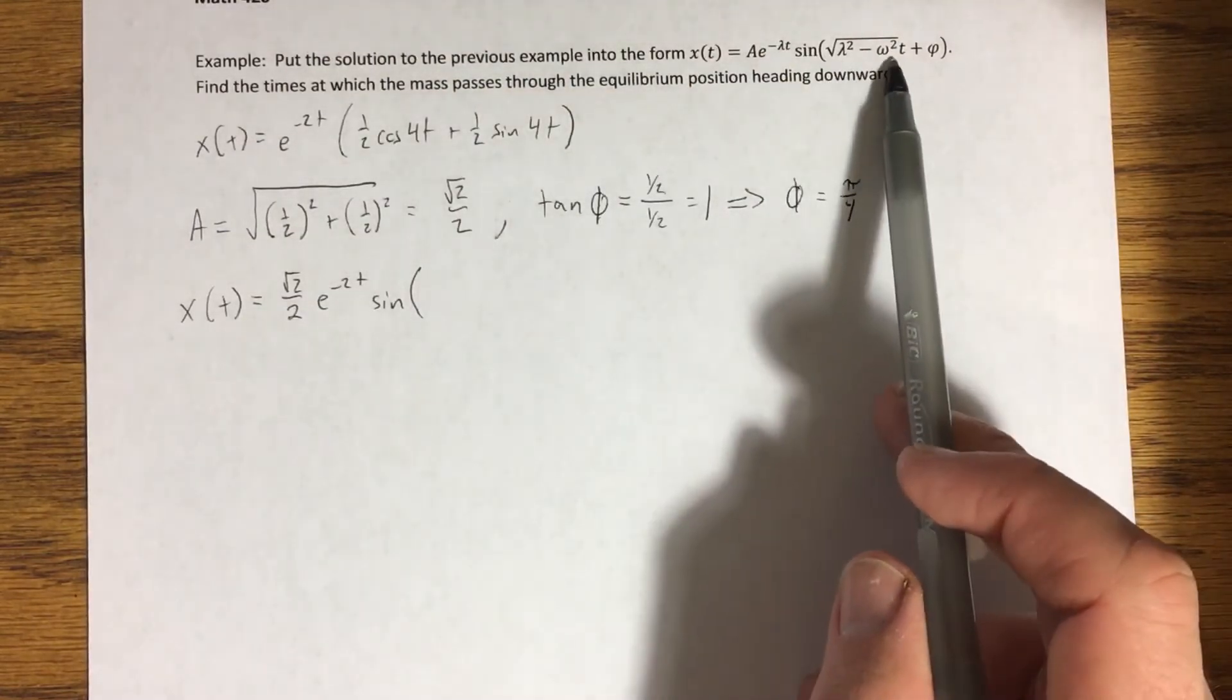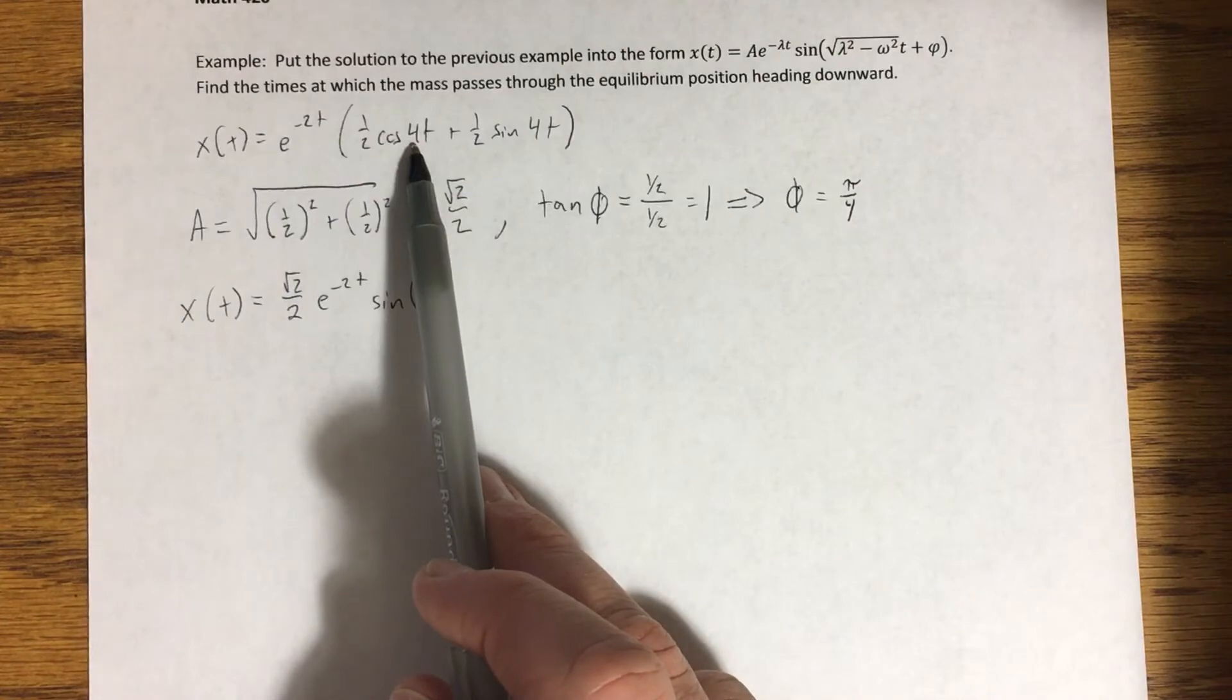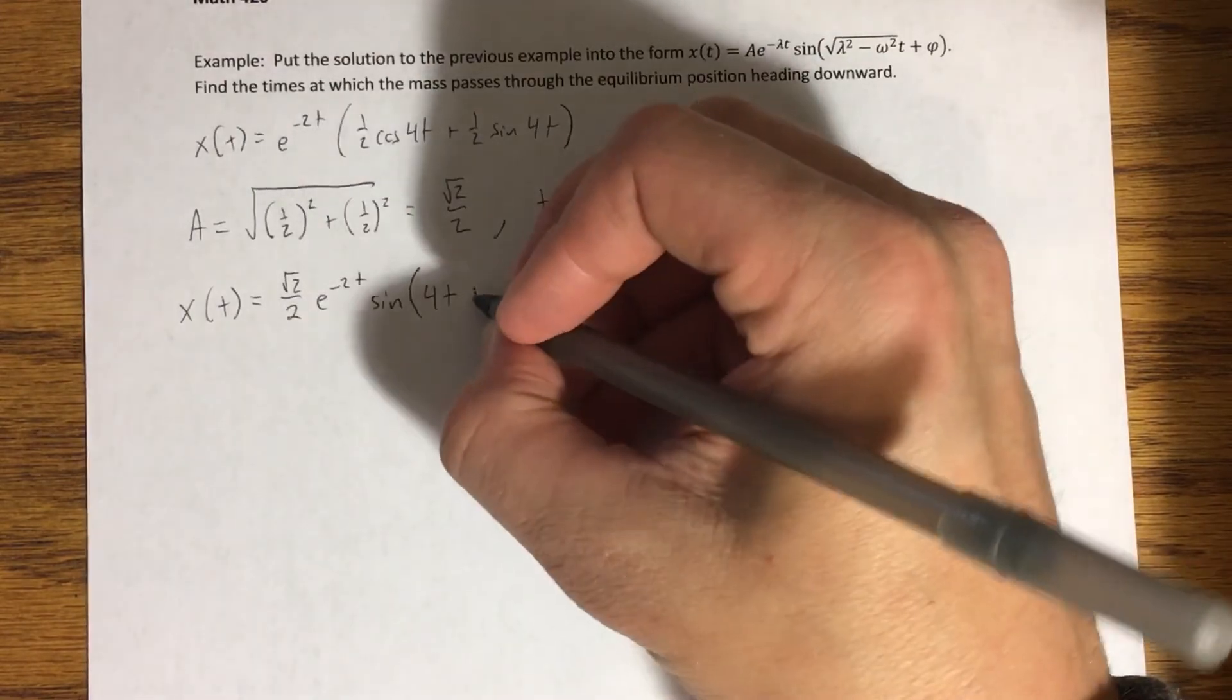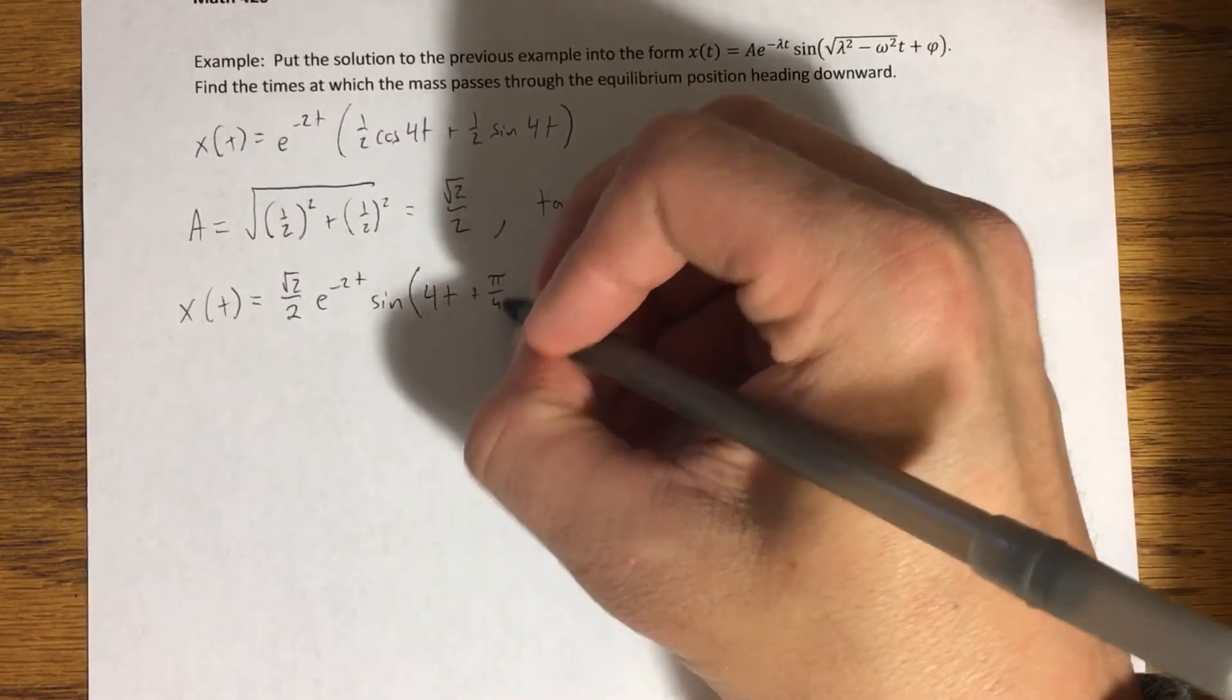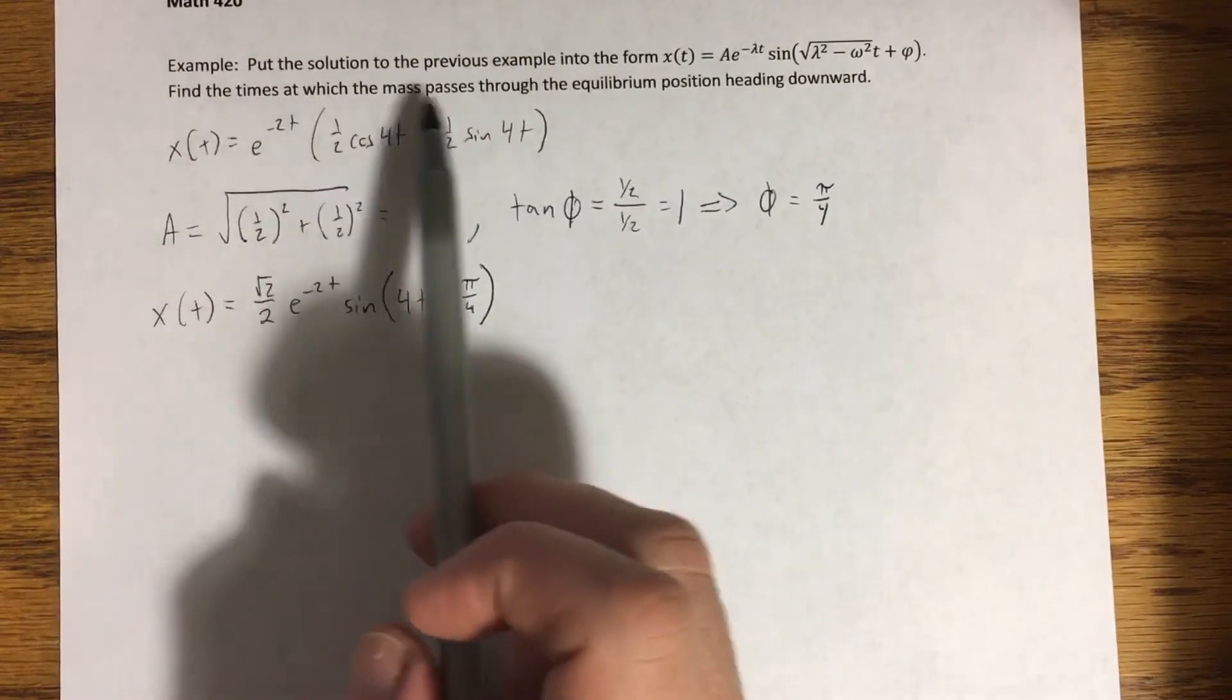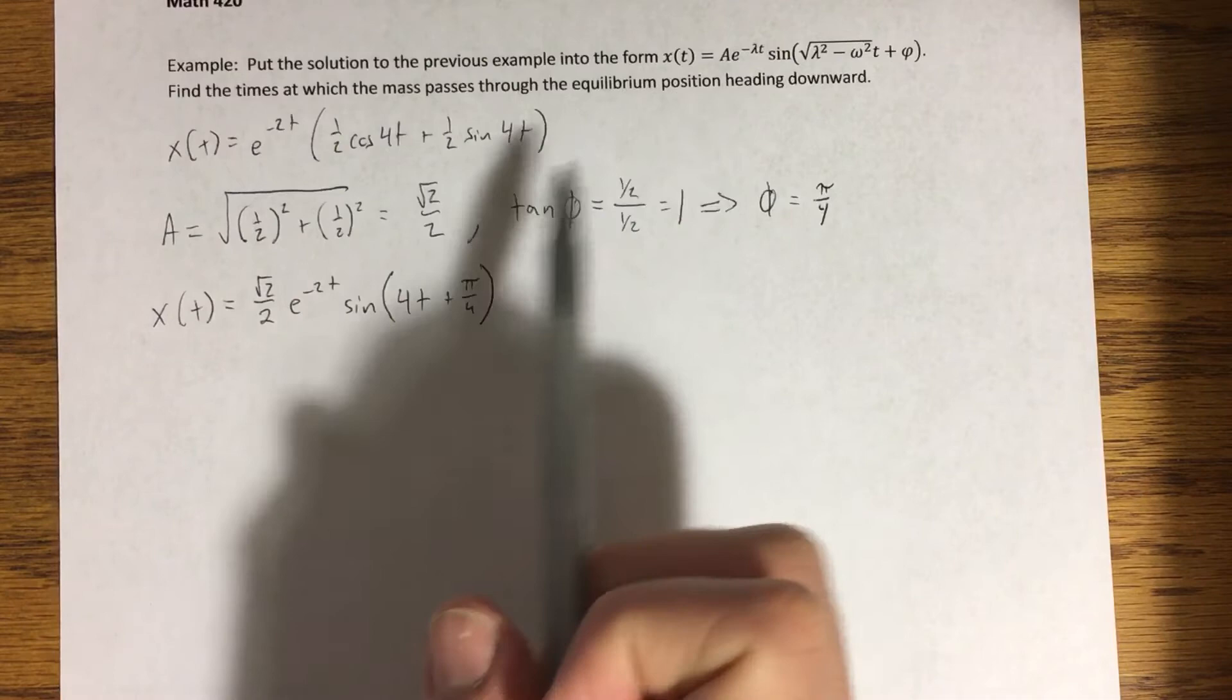Now, lambda squared minus omega squared is how we got the four here in the first place. So really, it's just 4t plus our phase angle plus pi over four. Okay. Now it's saying find the times at which the mass passes through the equilibrium position heading downward.